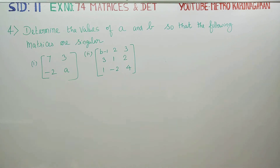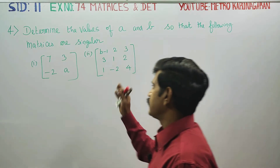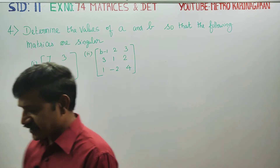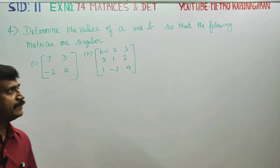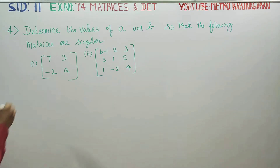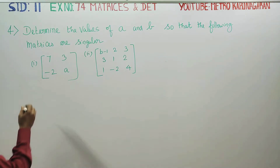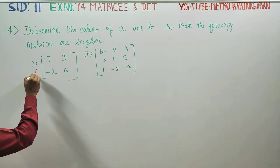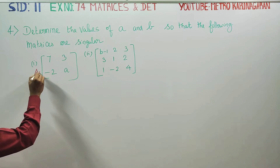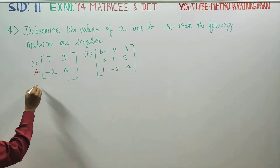Dear 11th standard students, determine the values of A and B so that the following matrices are singular. To make the two matrices singular, they are asking us to find the value of A as well as B. Just name this matrix as A. A is a singular matrix.